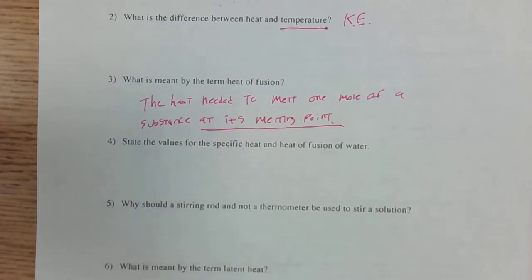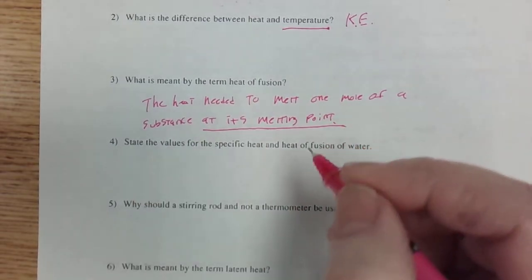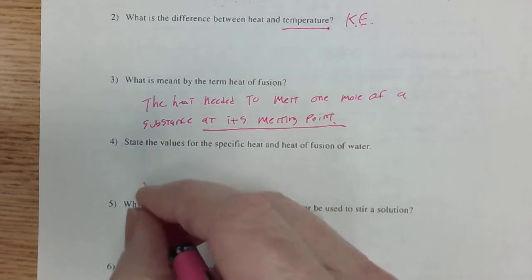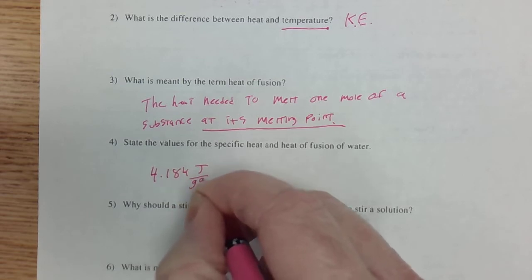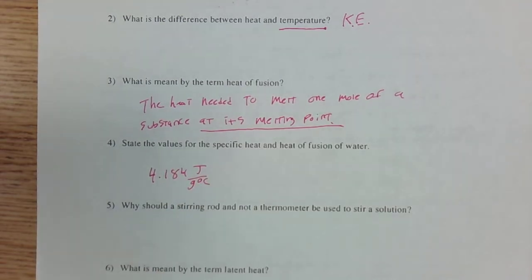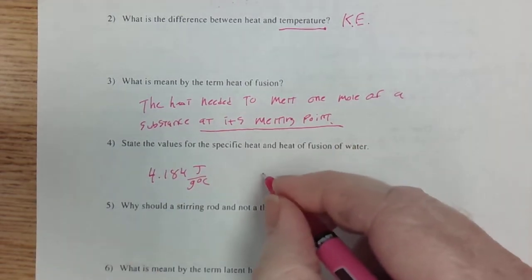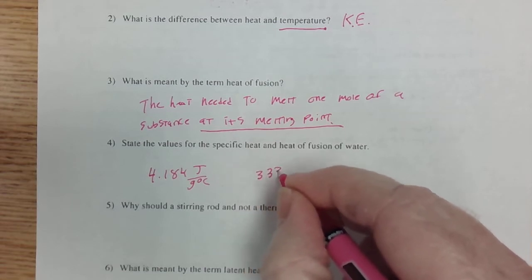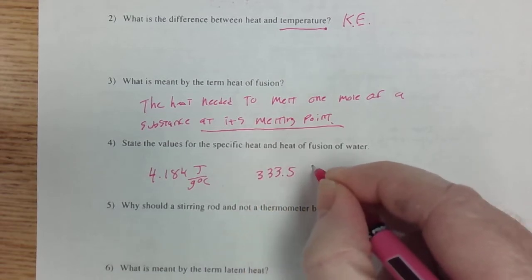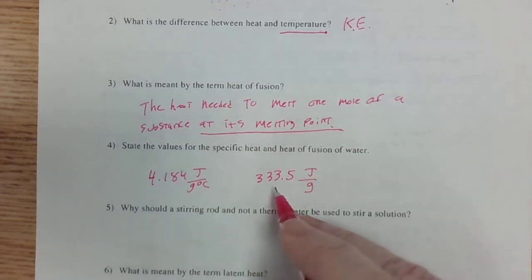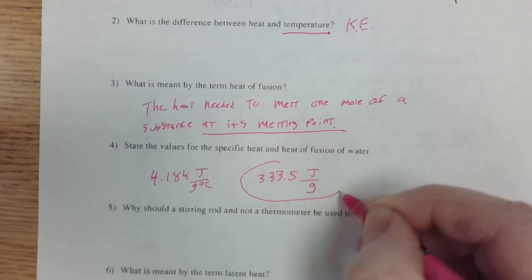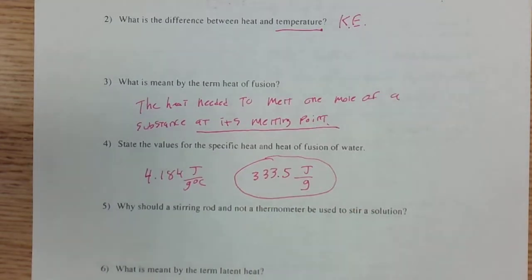Now let's start talking about water specifically. The specific heat for water in the liquid phase is 4.184 joules per gram degree Celsius. And the heat of fusion for water is 333.5 joules per gram. This is the number that we're going to try to calculate in today's experiment.